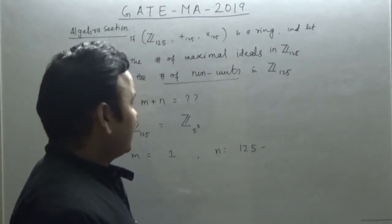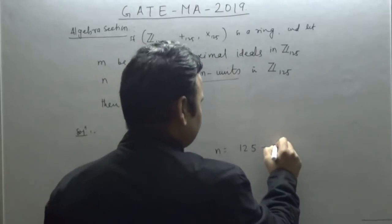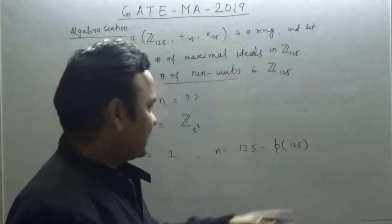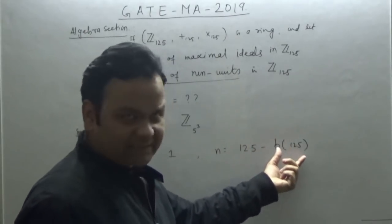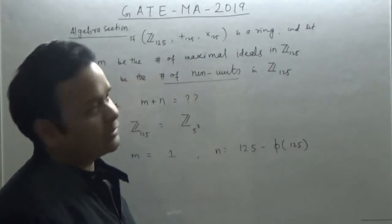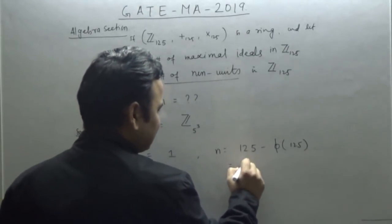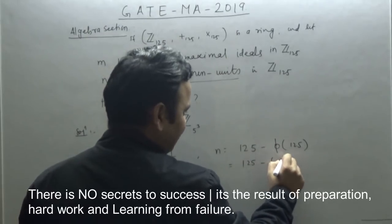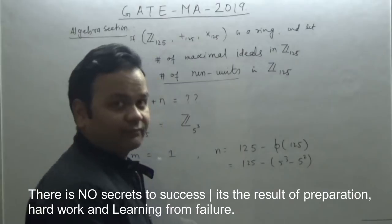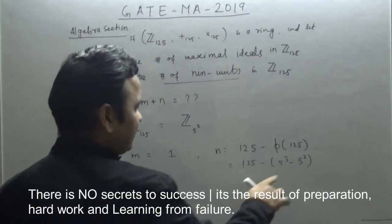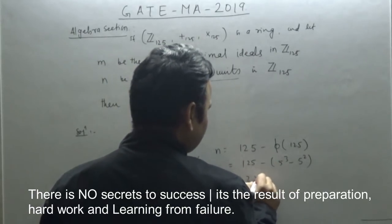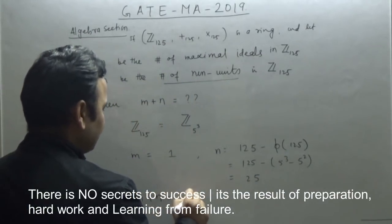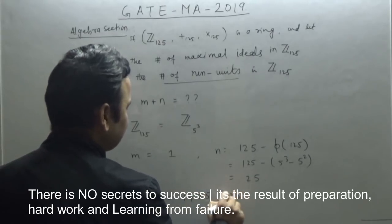Total number of elements is 125. The number of unit elements is φ(125) = 5³ − 5² = 125 − 25 = 100. So if I subtract the unit elements from the total, I get the non-units: 125 − 100 = 25. Therefore N = 25. So M plus N = 1 + 25 = 26.